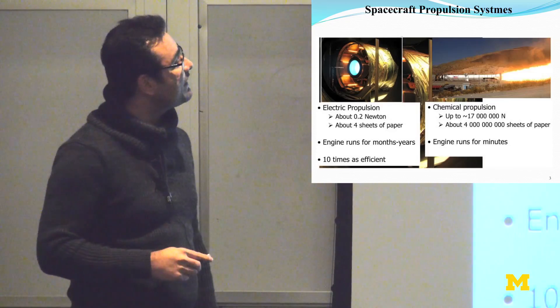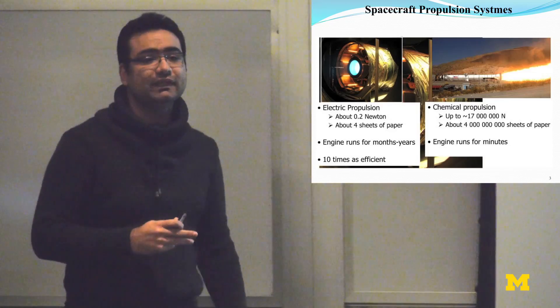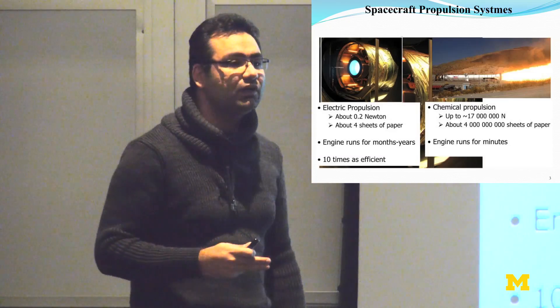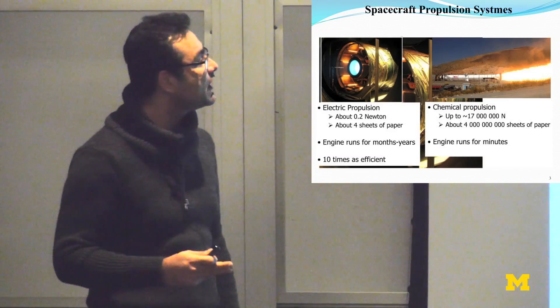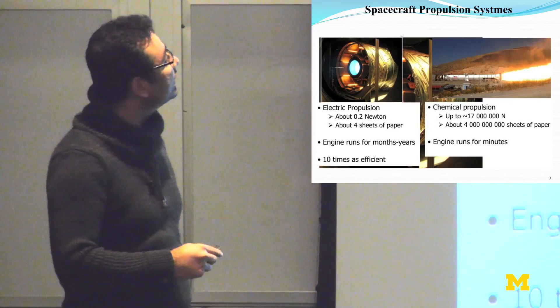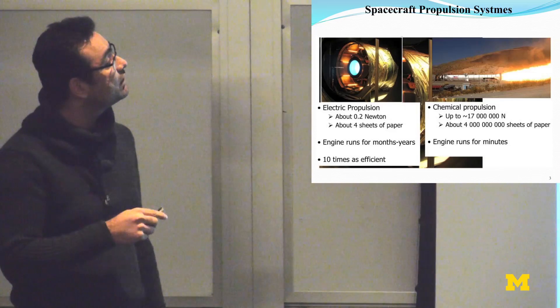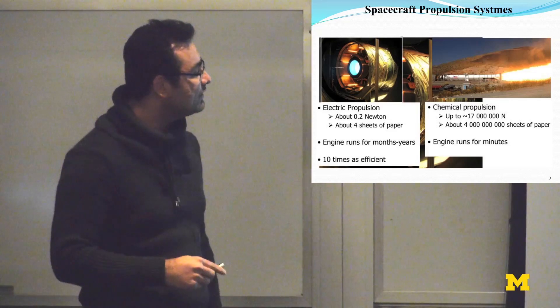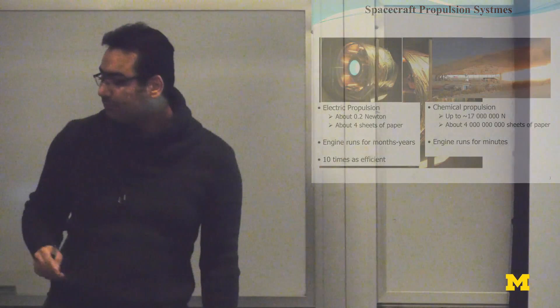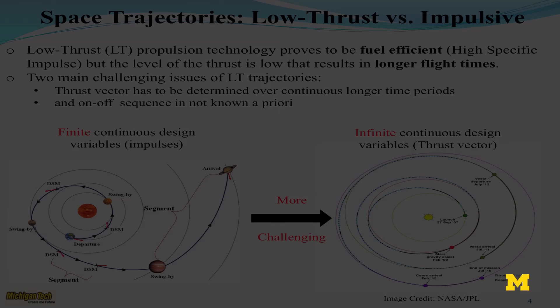The efficiency factor in consuming fuel is measured in terms of specific impulse. It determines how efficient an engine is consuming the propellant. For electrical spacecraft engines, that number is 10 times or even more than chemical rockets. So what is the consequence of that?